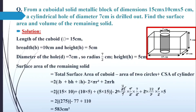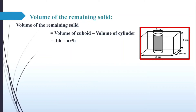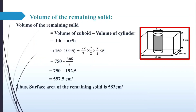Now for the volume of the remaining solid: volume of the cuboid minus volume of the cylinder, that is LBH minus πR²H. Putting L = 15, B = 10, H = 5, R = 7/2, I get 750 minus 385/2, which is 750 minus 192.5, giving 557.5 cm³. Thus, the surface area of the remaining solid is 583 cm² and the volume of the remaining solid is 557.5 cm³.